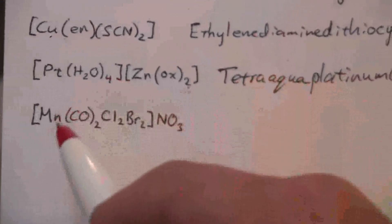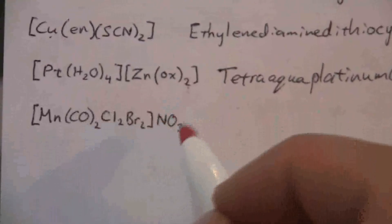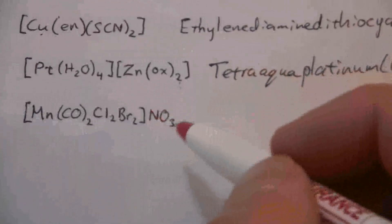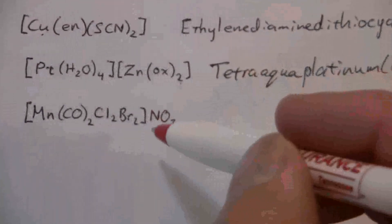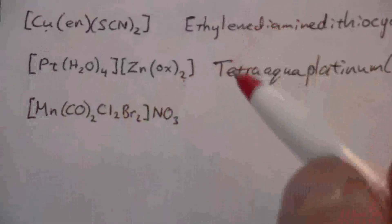All right, one more. In this one, here is our cation, and then we have a standard anion that we're familiar with, nitrate, which has a negative one charge. That means the cation must have a positive one charge.